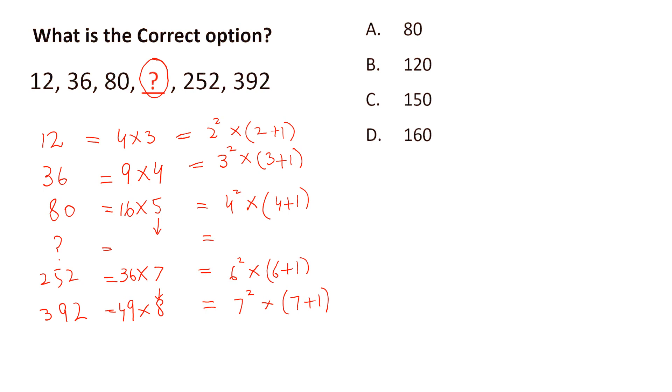So this term will be equal to 5 squared multiplied by 5 plus 1, and this will be equal to 25 multiplied by 6, which is 150. The general term will be a_n